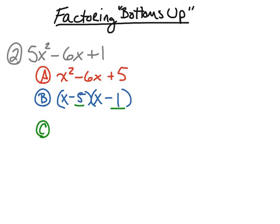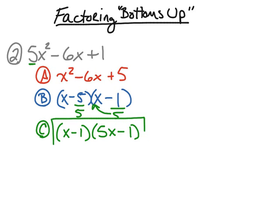The last step is to take the two numbers we just found and divide by 5 — that's the leading coefficient. Negative 5 divided by 5 is negative 1. If I try to divide negative 1 by 5, that results in a decimal, so we bring that bottom number up in front of the variable, making it 5x − 1. Therefore, the factors of 5x² − 6x + 1 are (x − 1) and (5x − 1).